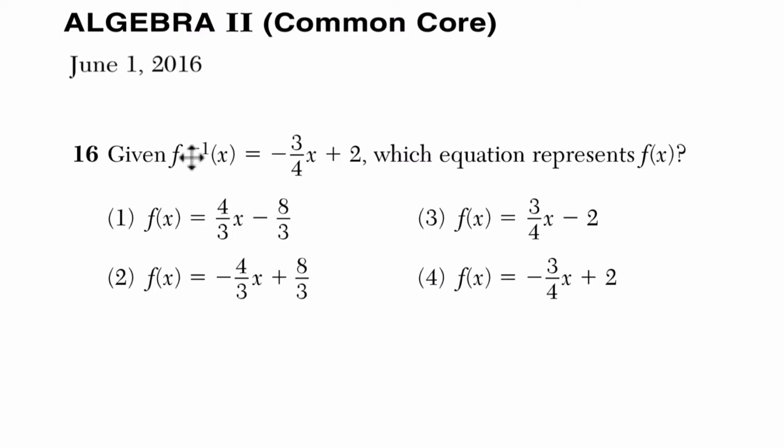Okay, so here we've got an inverse function problem. It says f to the negative 1 of x equals negative 3 fourths x plus 2. I said f to the negative 1, but this is not really an exponent. This means the inverse of f of x. That's not an exponent, that's inverse notation. So the inverse of f of x is this function.